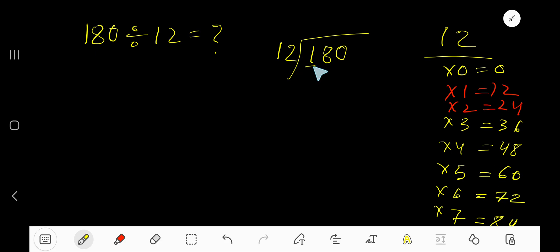12 goes into 1 how many times? 0 times, as our current dividend 1 is less than 12. So 0 times 12 is 0.